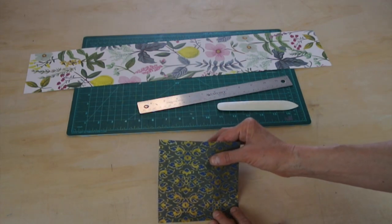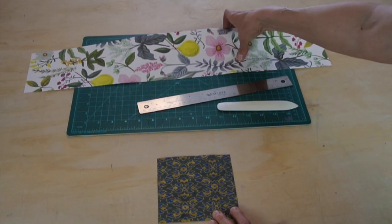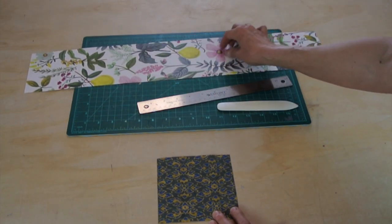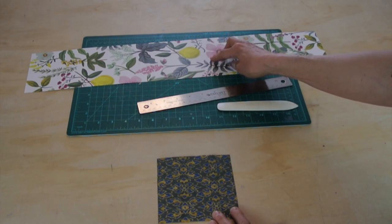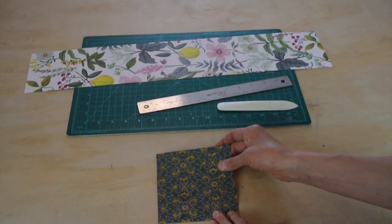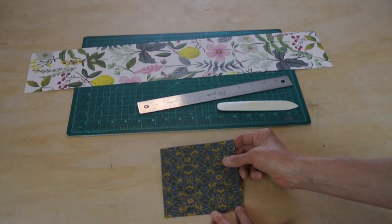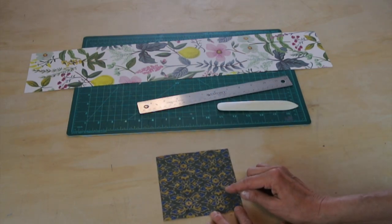This is a wrapping paper that I got at my local bookstore. It's made by Rifle Paper Company. And then this is a Japanese Kozo-like paper that's printed. And I got this at Mickey's Paper in Berkeley, California.